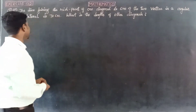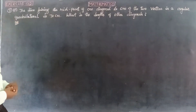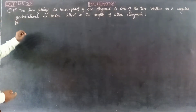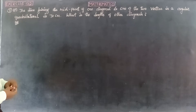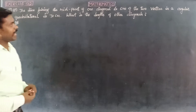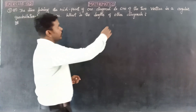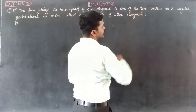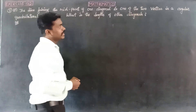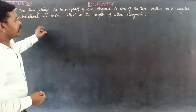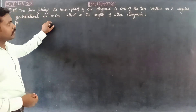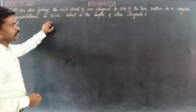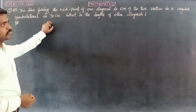The next exercise is number 7, Sub-Division EF. The line joining the midpoint of one diagonal to one of the two vertices in a regular quadrilateral is 70 cm. What is the length of the other diagonal?